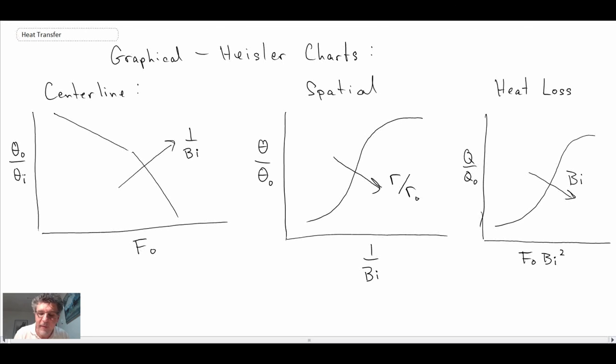So those are the curves that pertain to the cylinder for the Heisler charts. And very similar to what we saw for the slab. The only difference is that you're using R naught for your characteristic dimension, whereas before we were using L. Okay, so that is the cylinder. The next segment, we'll look at the equations for a sphere.